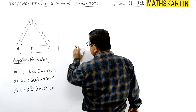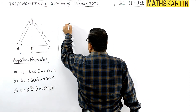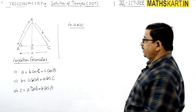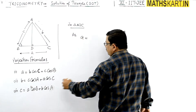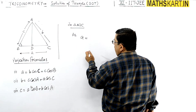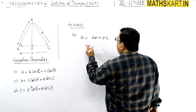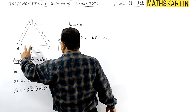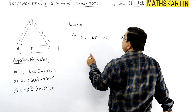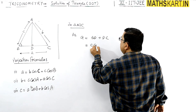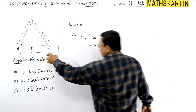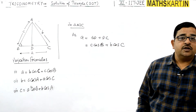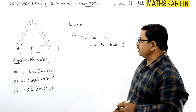To prove a projection formula in triangle ABC: the side a = BC can be written as BD + DC. Here BD = c·cos B and DC = b·cos C. Therefore a = c·cos B + b·cos C. This is a very easy proof — just drop the perpendicular from the opposite vertex.